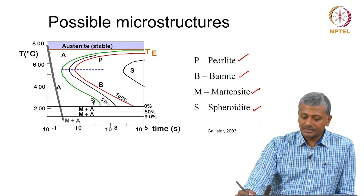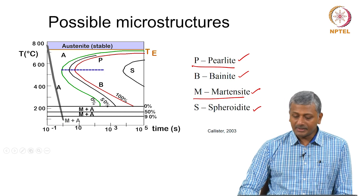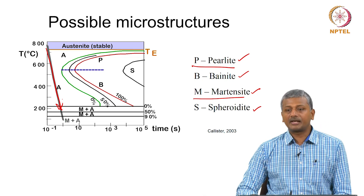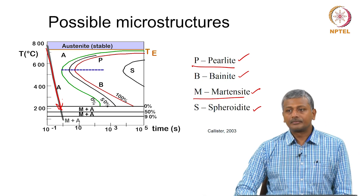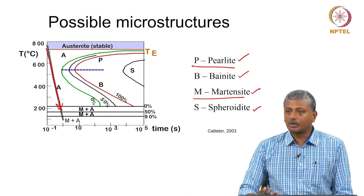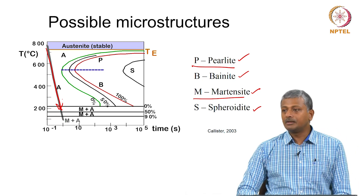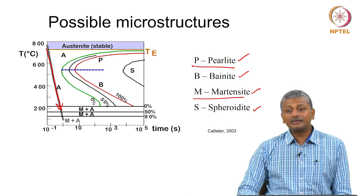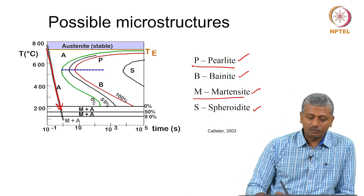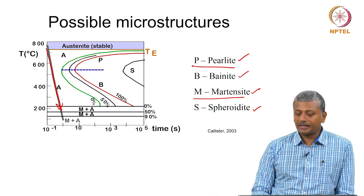In our case we are most concerned with pearlite and martensite. Martensite is very interesting because it is formed when you suddenly cool the steel from austenite to room temperature. How do you suddenly cool something? You can quench the material — throw water on it. This immediate cooling transforms steel into martensitic phase, which is a very hard and strong phase. Whereas if you have very slow cooling, you will start forming the other phases: pearlite, bainite, and so on.